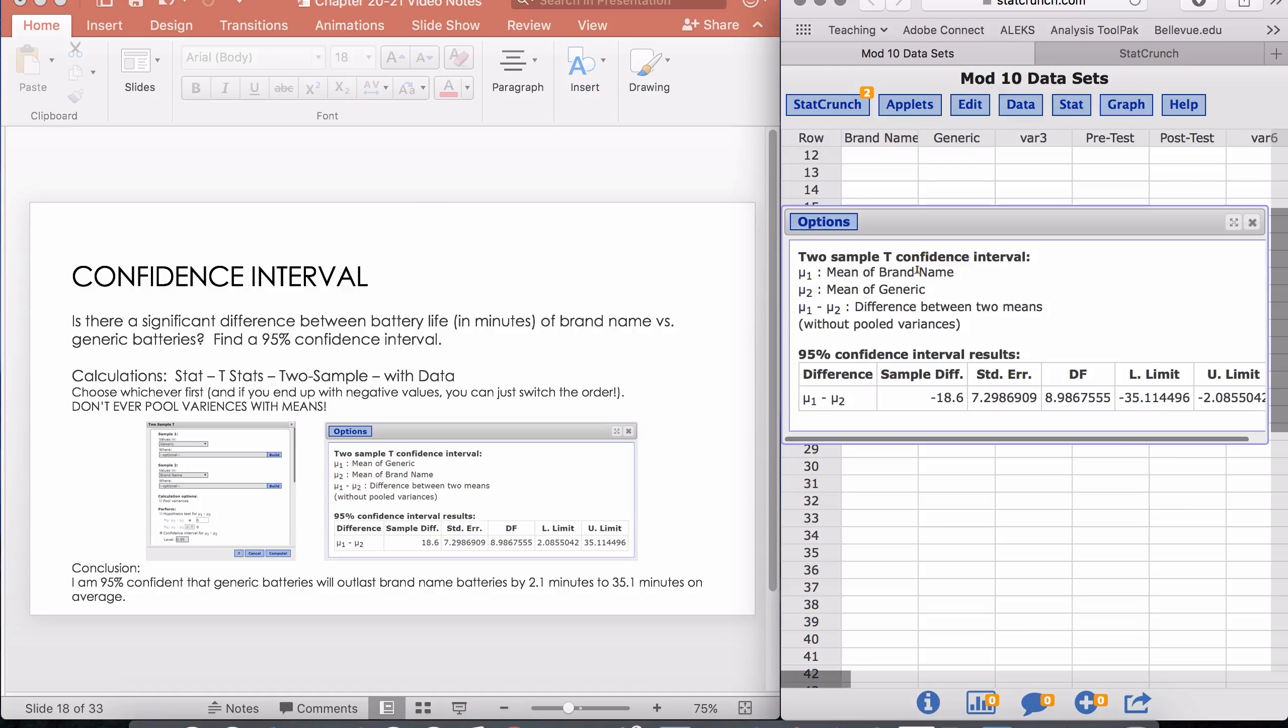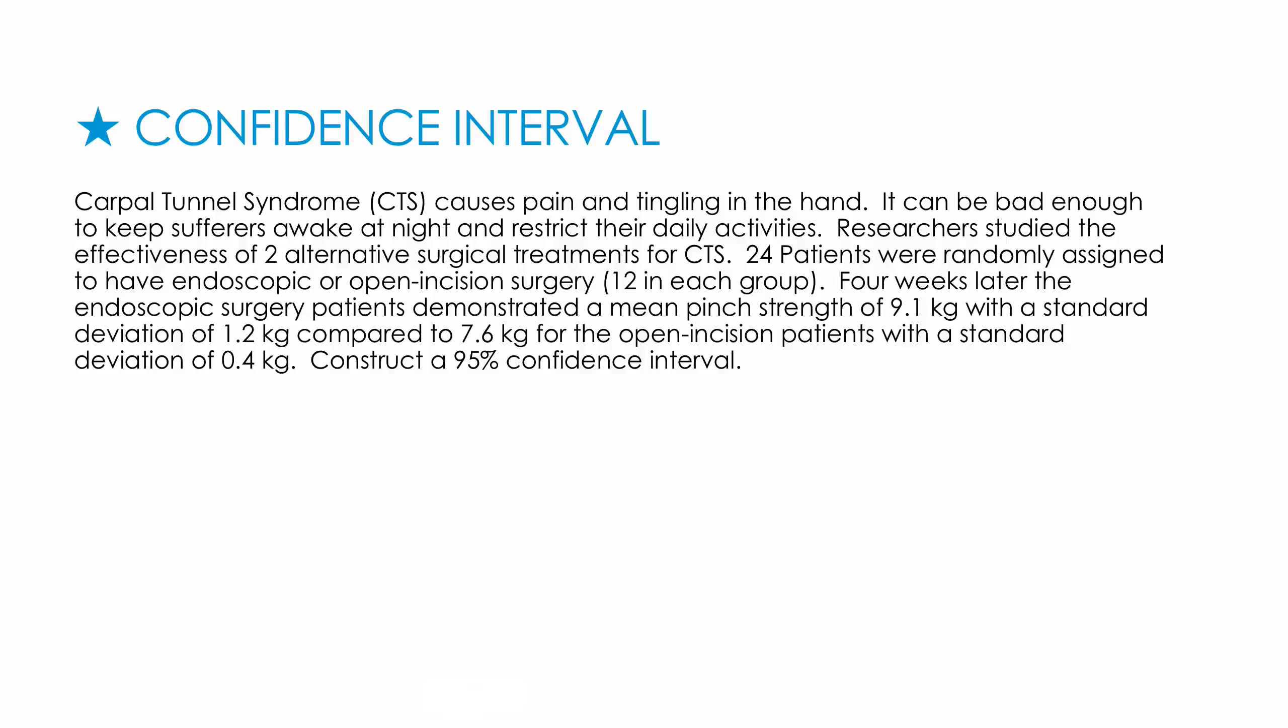What's the difference? I put brand name first and then generic, and these values tell me that brand name lasts 35 minutes to 2 minutes less than generic batteries. Whereas putting generic first, I'm saying generic batteries last longer than brand name batteries by 2.1 minutes to 35.1 minutes. Same exact conclusion, just saying it a little bit differently. Either way, it's certainly correct. The only thing you have to worry about is making sure you show which one is which.